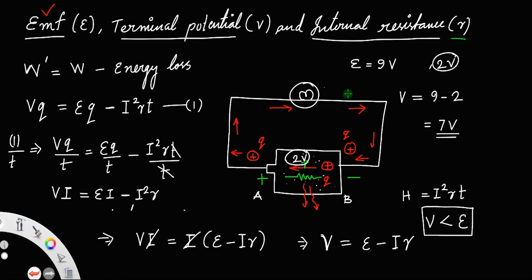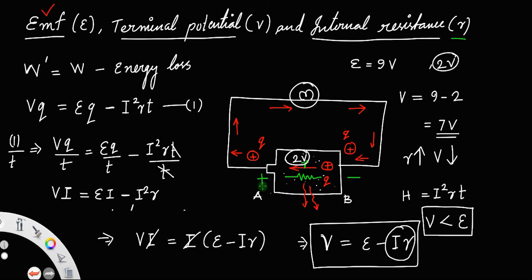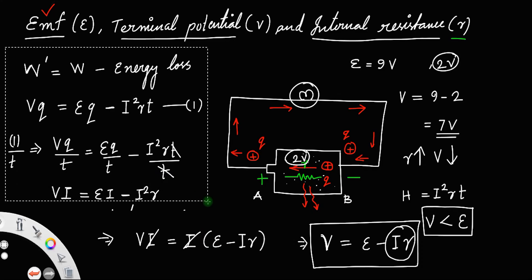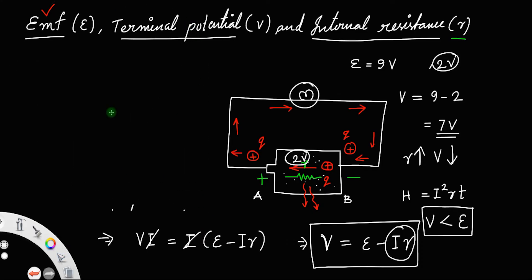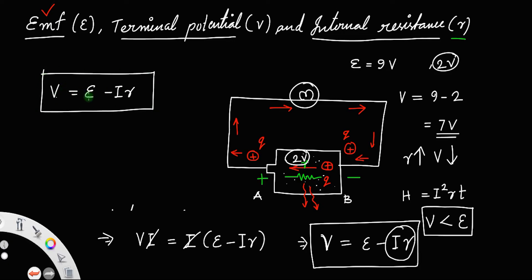This terminal potential V is what we get outside the circuit. Although the cell is capable of providing a potential of E, the actual output depends on the factor IR. If the internal resistance R is very high, the terminal potential will be less. So the final expression is V equals E minus IR — this is the relationship between terminal potential, EMF, and internal resistance, where I is the current through the circuit.